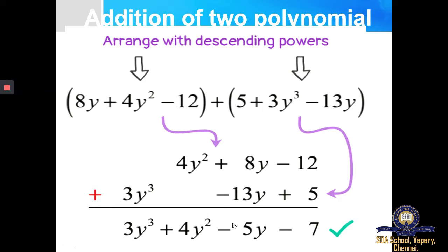Then for the constants: minus 12 plus 5, again there is a difference of signs so you subtract and write the symbol of the greater number. 12 is the greater number and it has minus, so the answer is minus 7. I hope everybody has understood.